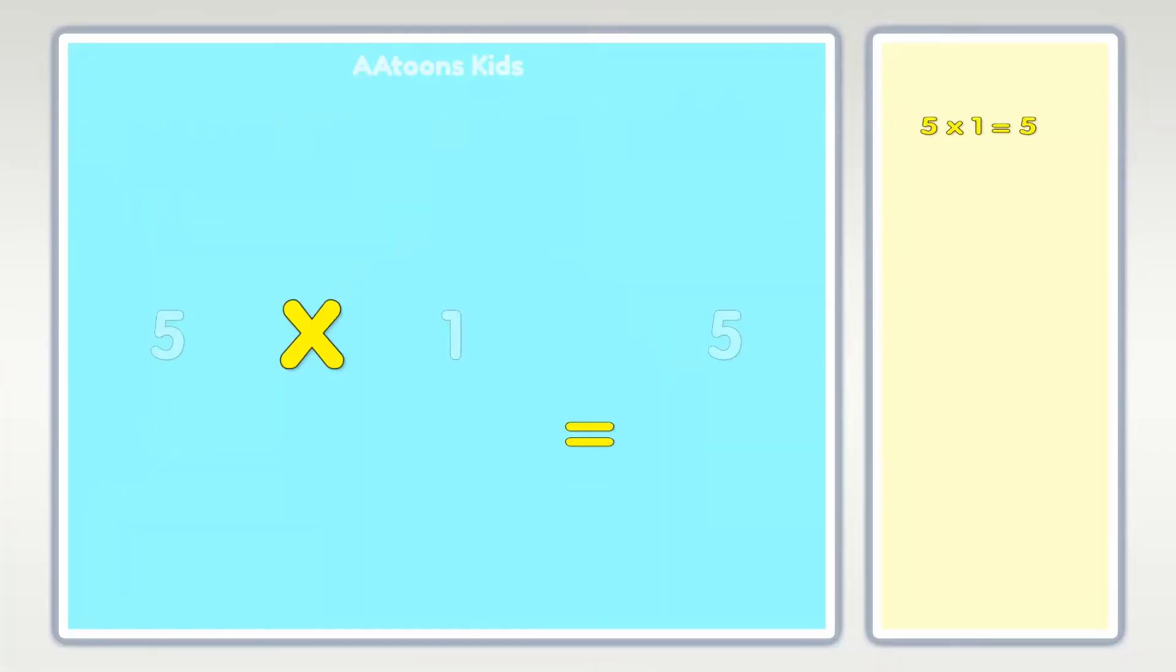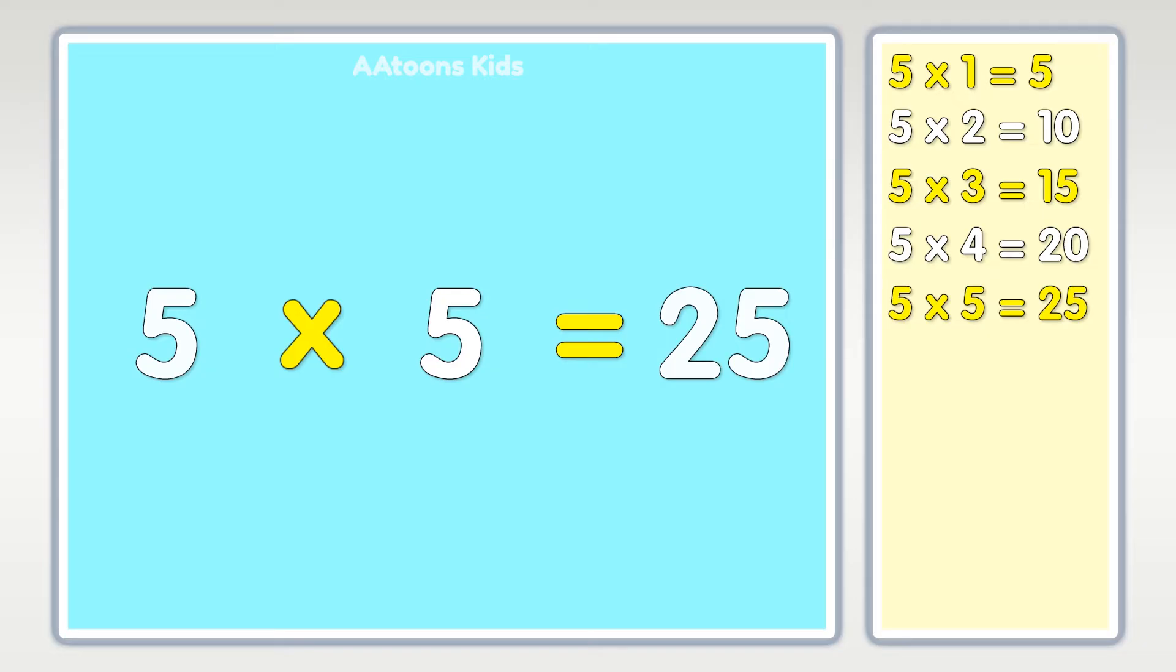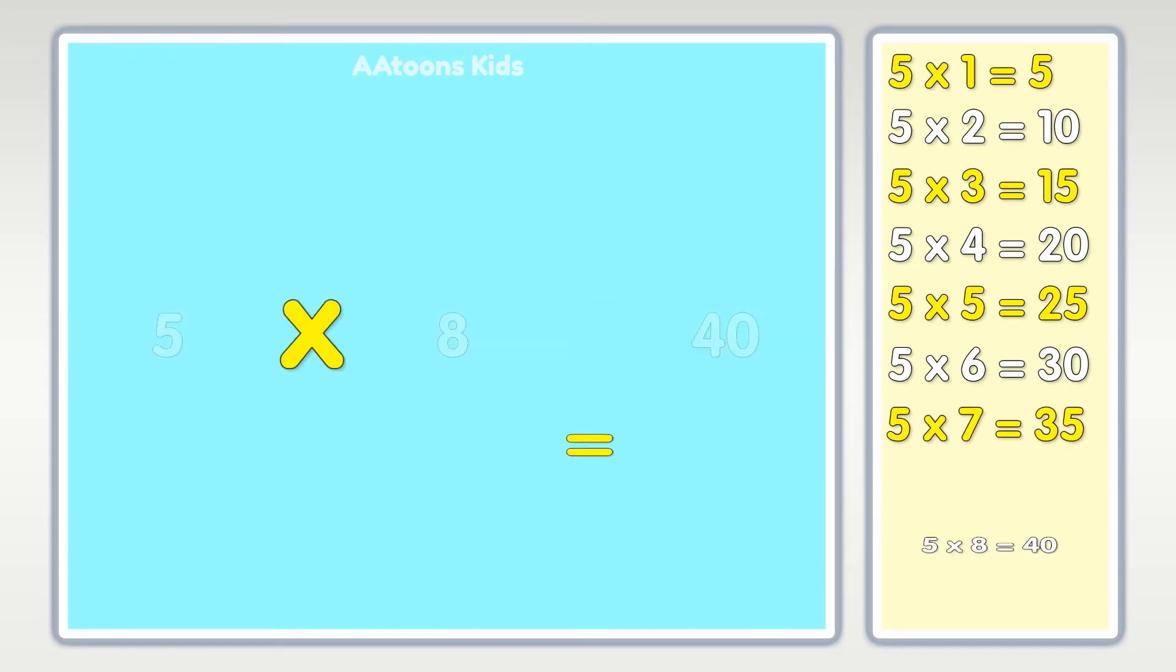Table of five: five times one is five, five times two is ten, five times three is fifteen, five times four is twenty, five times five is twenty-five, five times six is thirty, five times seven is thirty-five, five times eight is forty.